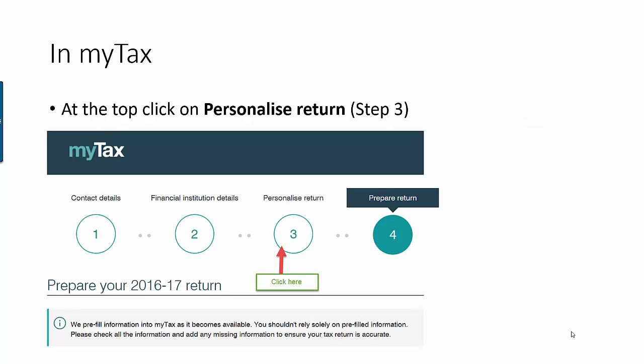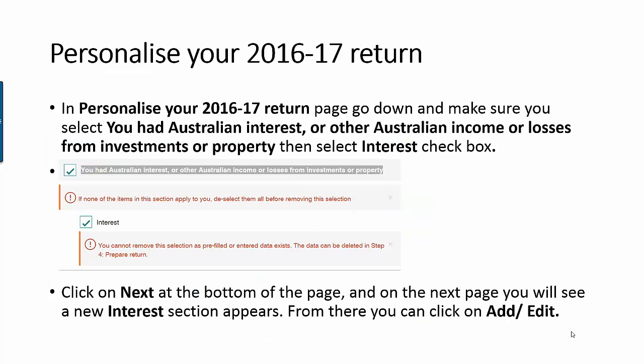At the top of your MyTax return, click on step number three, which is the Personalized Return. You need to go back one step, so click on that. On the next screen, go down and select 'You had Australian interest or other Australian income or losses from investments or property.'